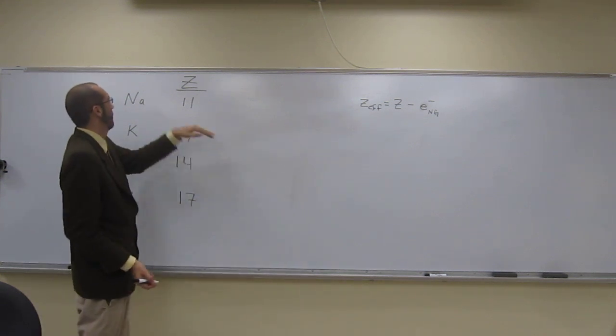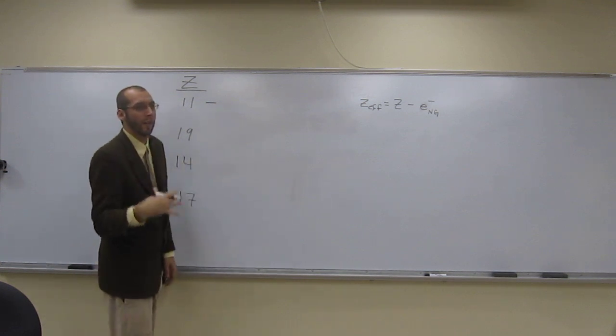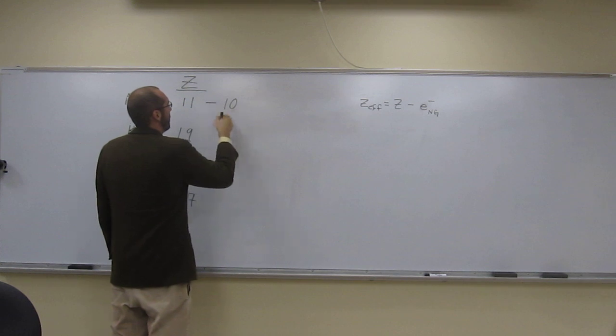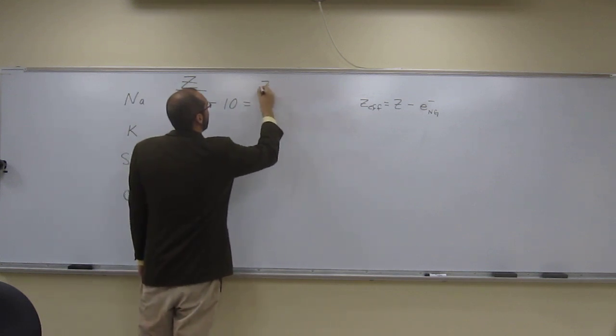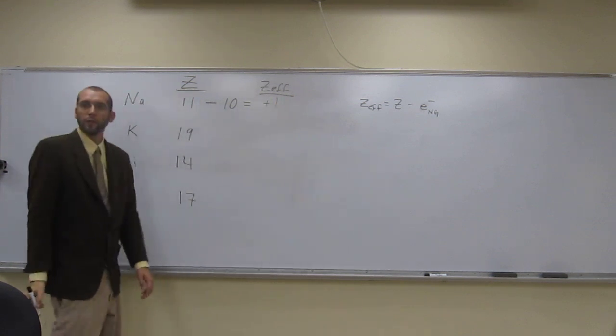So what's the noble gas before sodium? Neon. And how many electrons does it have in it? Ten. So we're just going to say eleven minus ten equals, and this will be the Z effective, so positive one.